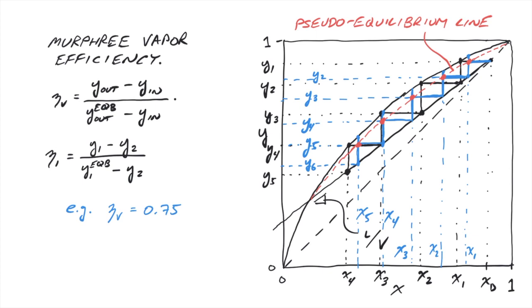Conversely, if we have measured values of the gas and liquid composition on each stage of a pilot column, we can use that to measure the Murphree efficiency of various types of trays as a function of gas flux and potentially apply that to the design of a full-scale column.